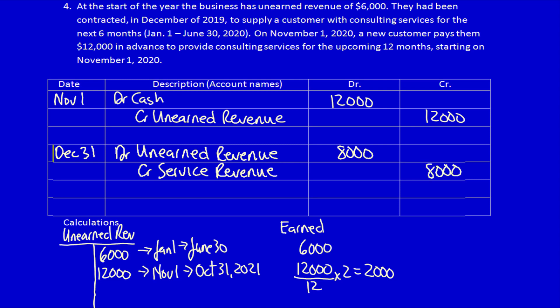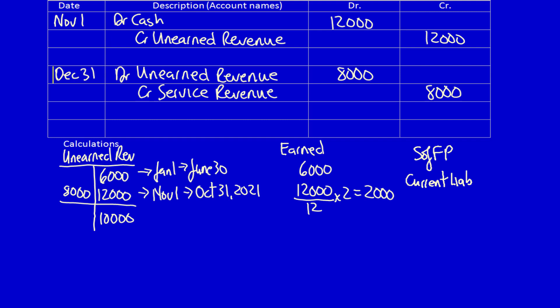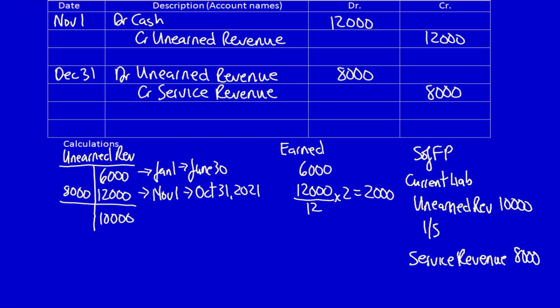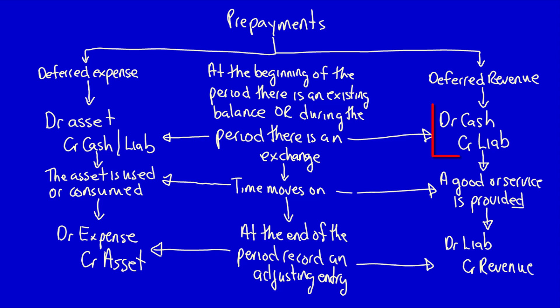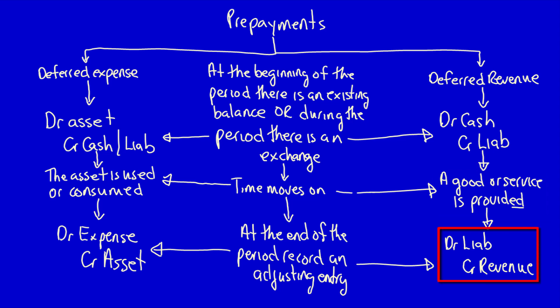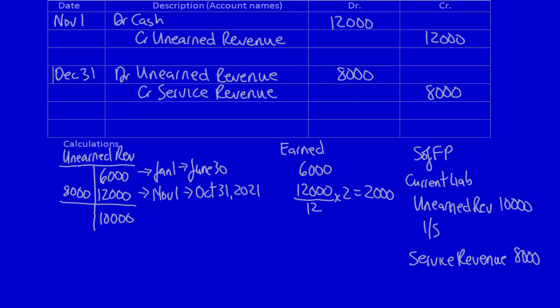Eight thousand dollars. Entering this into our unearned revenue T-account, we can see we still owe services to our customer of ten thousand dollars. Looking at our statement of financial position: current liability — unearned revenue — ten thousand dollars. On the income statement: service revenue — eight thousand dollars. Matching our flowchart: there was an opening balance, then an exchange involving cash and unearned revenue, services were provided during the period, and at year end we did an adjusting entry to recognize revenue and reduce the liability by eight thousand dollars. That is a deferred revenue adjusting entry.